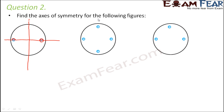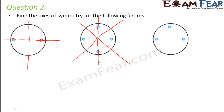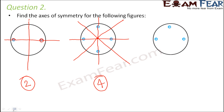For the second circle there are many possible options. You can draw a vertical line so each half has two holes, or a horizontal line achieving the same. You can also draw a line through the centers of two of the holes, giving each half one complete hole and two half holes. Similarly for the other pair of holes. So the total number of axes of symmetry for this circle is four.